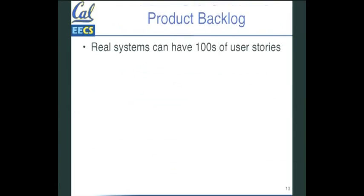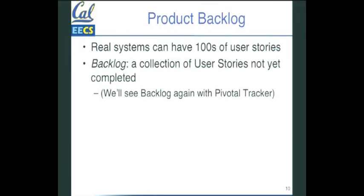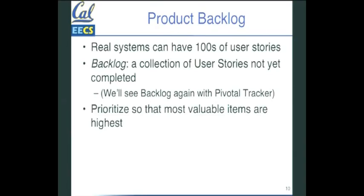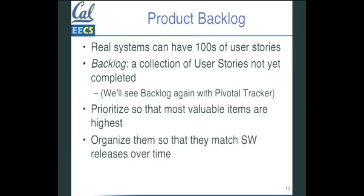Real systems don't have just a couple of stories — they have hundreds. It's easy to come up with features for a new application all the time. What they call the backlog is this collection of user stories that haven't been implemented yet. Later in the course, when we talk about tools that track user stories, we'll see the word backlog again. You get these three-by-five cards and prioritize them — the stakeholders agree, so the most valuable ones are towards the front of the backlog and the less valuable ones behind them. If you're doing specific software releases in coordination with the customer and they want something by certain dates, you use the cards and associate release dates with collections of them.